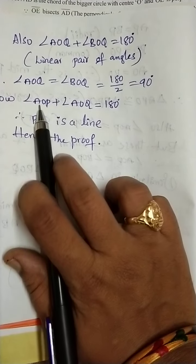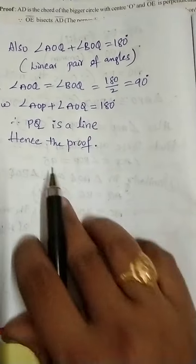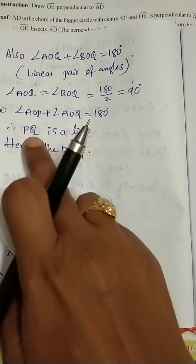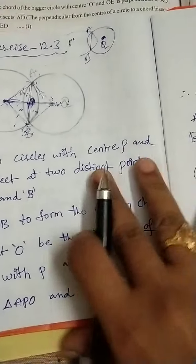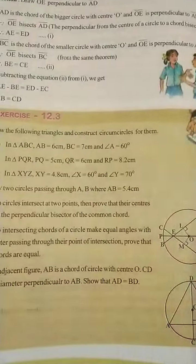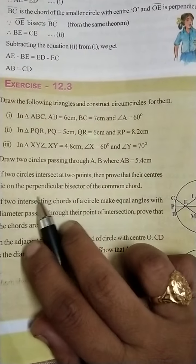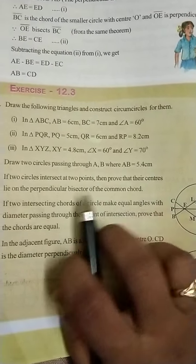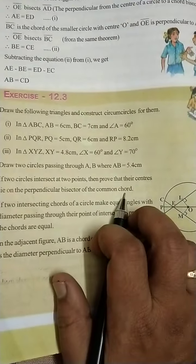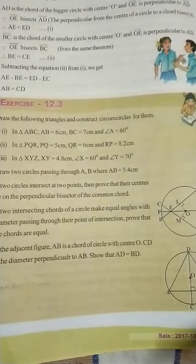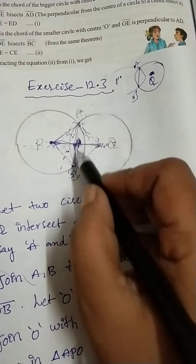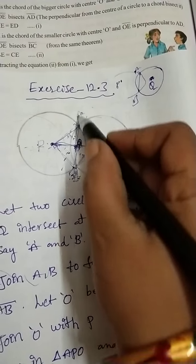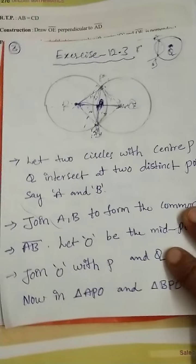Now, if it is a linear pair, PQ is a line. Whenever PQ is a line, we can say that their centers lie on the perpendicular bisector of the common chord AB. Their centers lie on the common chord AB, and O lies on the common chord AB.